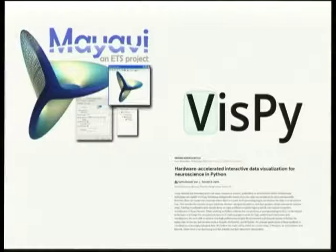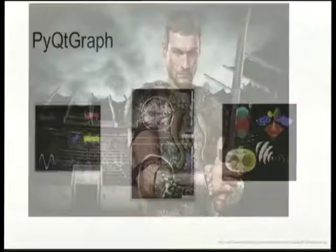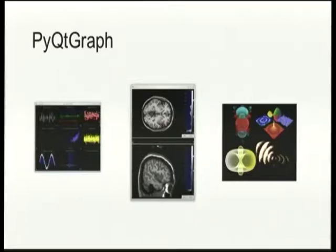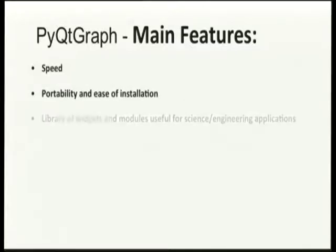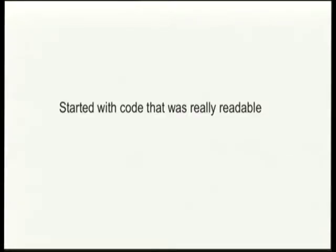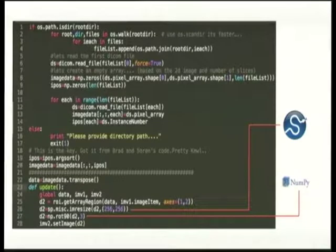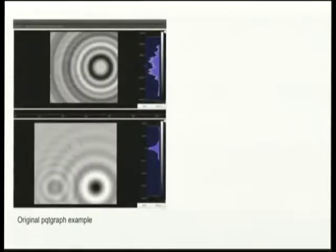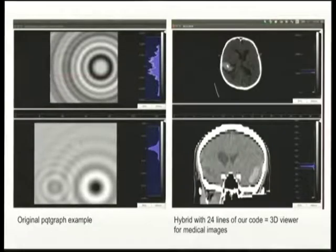I found a package called PyQtGraph. Some of you may already know about this, and the web page caught my attention. A brain image on it looked like what we do all the time, and maybe this could be adapted to our needs. I looked into the features: the speed — it is very responsive. It is portable and easy to install, and it's suitable for science and engineering. That's how my first baby step started. I downloaded it, started reading the examples — the code is so nicely written and easy to follow. I only wrote 24 lines of code with a little bit of SciPy and NumPy, injected those 24 lines into the original PyQtGraph example, and got a running 3D data viewer in no time.